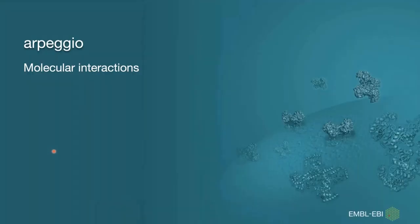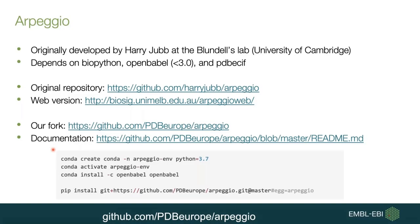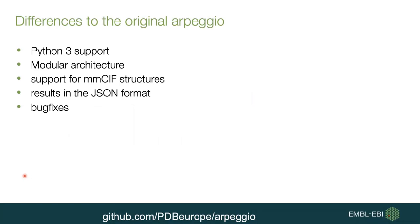The last package I'd like to talk about today is called Arpeggio, and we use it for perceiving molecular interactions. Arpeggio was originally developed by Harry when he was a PhD student at Sir Thomas Blundell's lab at the University of Cambridge. It depends on BioPython, OpenBabel, and PDBE-SIF. The best way to work with Arpeggio is through a Conda environment. This implementation differs from the original in that it supports Python 3, has a modular architecture making it pip-installable, supports mmCIF format, and introduces JSON output format to support programmatic parsing of results.